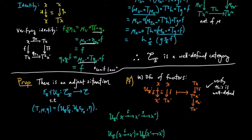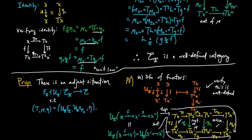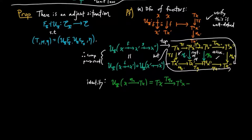To verify that the forgetful functor is well-defined, we show it preserves composition and identities. Given a compatible pair of morphisms F followed by G in the Kleisli category, applying the forgetful functor gives us the composite in E of TF, T²G, T mu_{X''}, and then mu_{X''}. Applying the forgetful functor to F and G separately and taking their composite in E gives TF mu_{X'} TG followed by mu_{X''}. These two expressions are equal: the left square commutes trivially, the middle square by naturality of mu, and the right square by the associativity law for the monad. Identities are also preserved by the unit law. Therefore, the forgetful functor is well-defined.